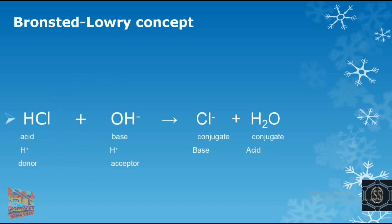Next is the Bronsted-Lowry concept. According to this concept, acids are proton donors and bases are proton acceptors, where proton refers to H⁺. For example, HCl being an acid donates H⁺ and forms Cl⁻, while OH⁻ being a base accepts H⁺ and forms H₂O. The Cl⁻ formed from HCl is known as the conjugate base, and the H₂O formed from OH⁻ is known as the conjugate acid.